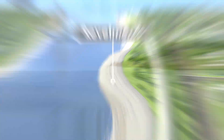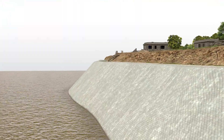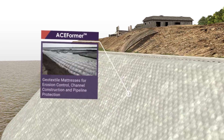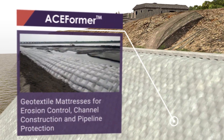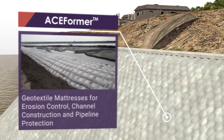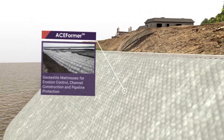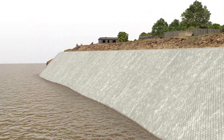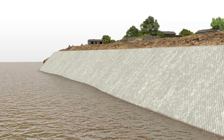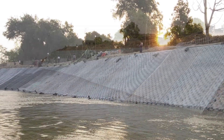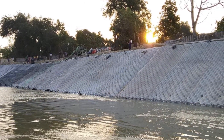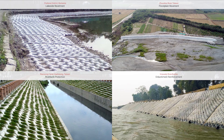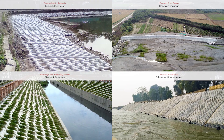Revetments: ACE Formr, a two-layer, high-strength geotextile mattress grouted with cement mortar, provides an effective shield against erosion. It is capable of reducing the wave energy and flow velocity onto the applied riverbank. In addition, it accommodates different landforms without issues whether it is installed on the waterfront or underwater.